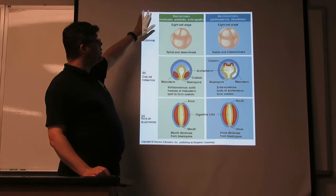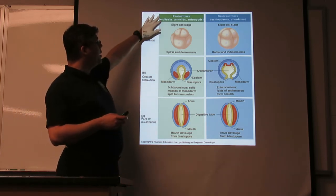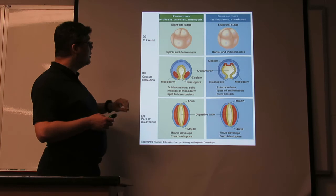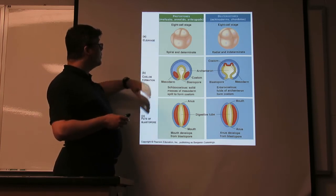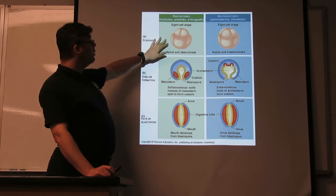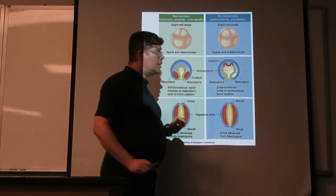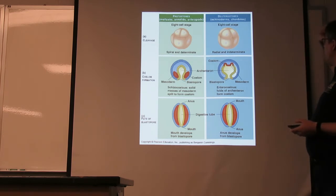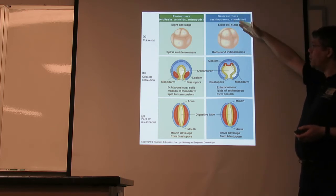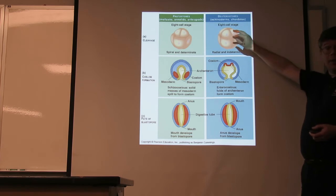So here we have our comparison: the protostomes, including things like the mollusks, the annelids, the arthropods. Mollusks: snails, clams, squid, octopus. Annelids: those are segmented worms, earthworms, a lot of ocean worms. Arthropods: jointed legs — insects, crabs, spiders, lots of things. If there is a clear pattern to the development, it's typically spiral, and cell division is determinate. Once the two cells split, each one has its own destiny as part of the animal. Deuterostomes — again including ourselves, other vertebrates, the rest of the chordates, and the echinoderms — have the radial cleavage pattern, where the cells are largely the same for quite some time, and indeterminate. Each of these cells can grow into various things.